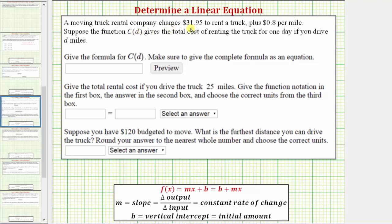A moving truck rental company charges $31.95 to rent a truck plus $0.80 per mile. Suppose the function C(D) gives the total cost of renting the truck for one day if you drive D miles.